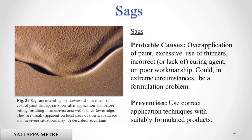Sags. Probable causes: over-application of paint, excessive use of thinners, incorrect or lack of curing agent, or poor workmanship. Could, in extreme circumstances, be a formulation problem. Prevention: use correct application techniques with suitably formulated products.